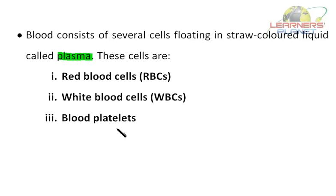Many substances are transported dissolved in the plasma — carbon dioxide from the organs to the lungs, soluble products of digestion from the small intestine to other organs, and urea from the liver to the kidneys. White blood cells form part of the body's defense system against microorganisms. Platelets are fragments of cells that help blood to clot at the site of a wound. Red blood cells transport oxygen from the lungs to the organs and are packed with a red pigment called hemoglobin. In the lungs, oxygen combines with hemoglobin to form oxyhemoglobin.